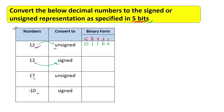Now treating 12 as a signed number: the last bit is reserved for the sign. Since 12 is positive, the sign bit is 0. The remaining 4 bits represent the magnitude — 8 plus 4 = 12, giving bits 1100. So the signed representation is also 01100. You can see that both unsigned and signed representations of positive 12 are the same.